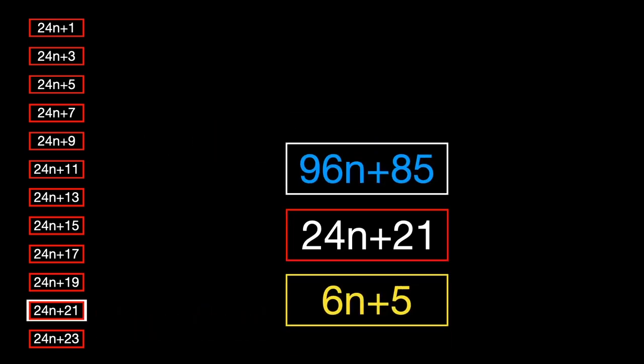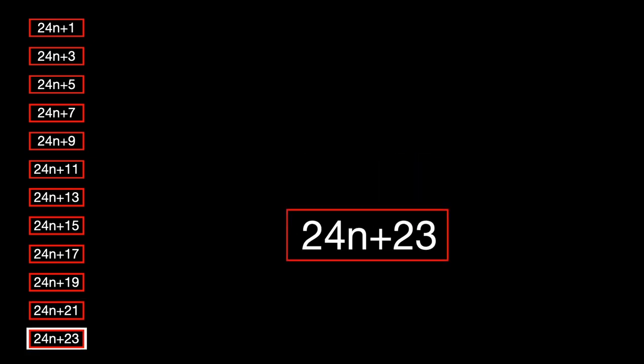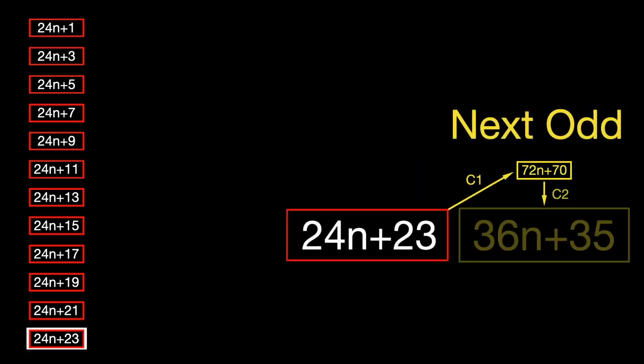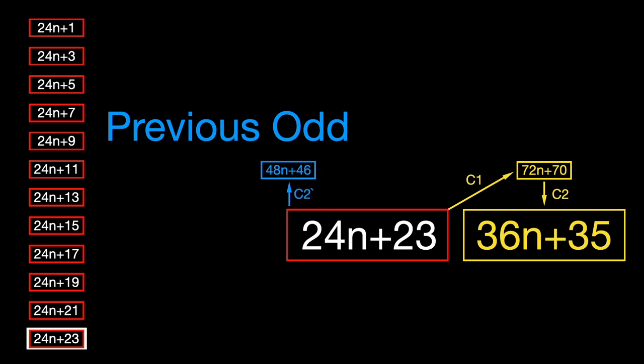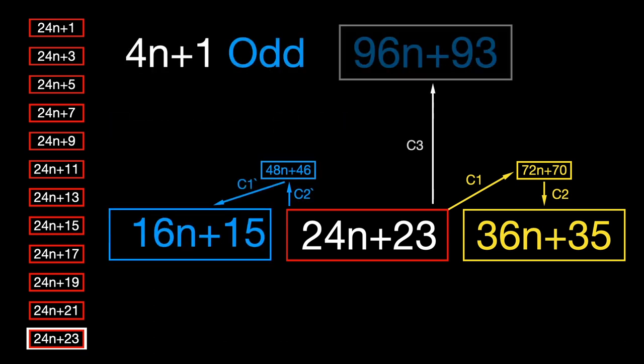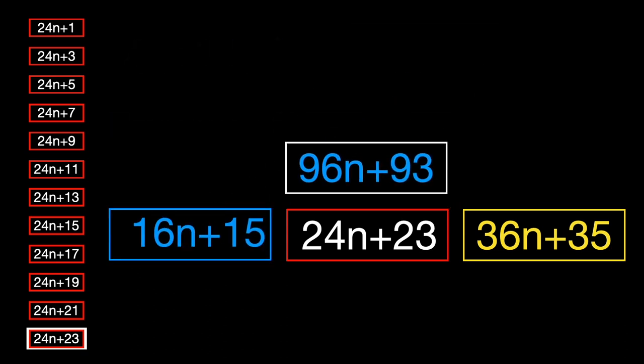Since no odd number can be removed from the Collatz tree without violating the Collatz rules, then the Collatz conjecture is true, and every integer will have a path that converges to one.